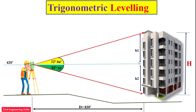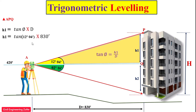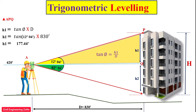To calculate h1, we take the upper triangle A, P, and Q. Using tangent theta equals perpendicular divided by base, our perpendicular is h1 and our base is d. So h1 equals tangent theta multiplied by d. With theta equal to 12 degrees 04 minutes and d equal to 830 feet, we get h1 equal to 177.44 feet.